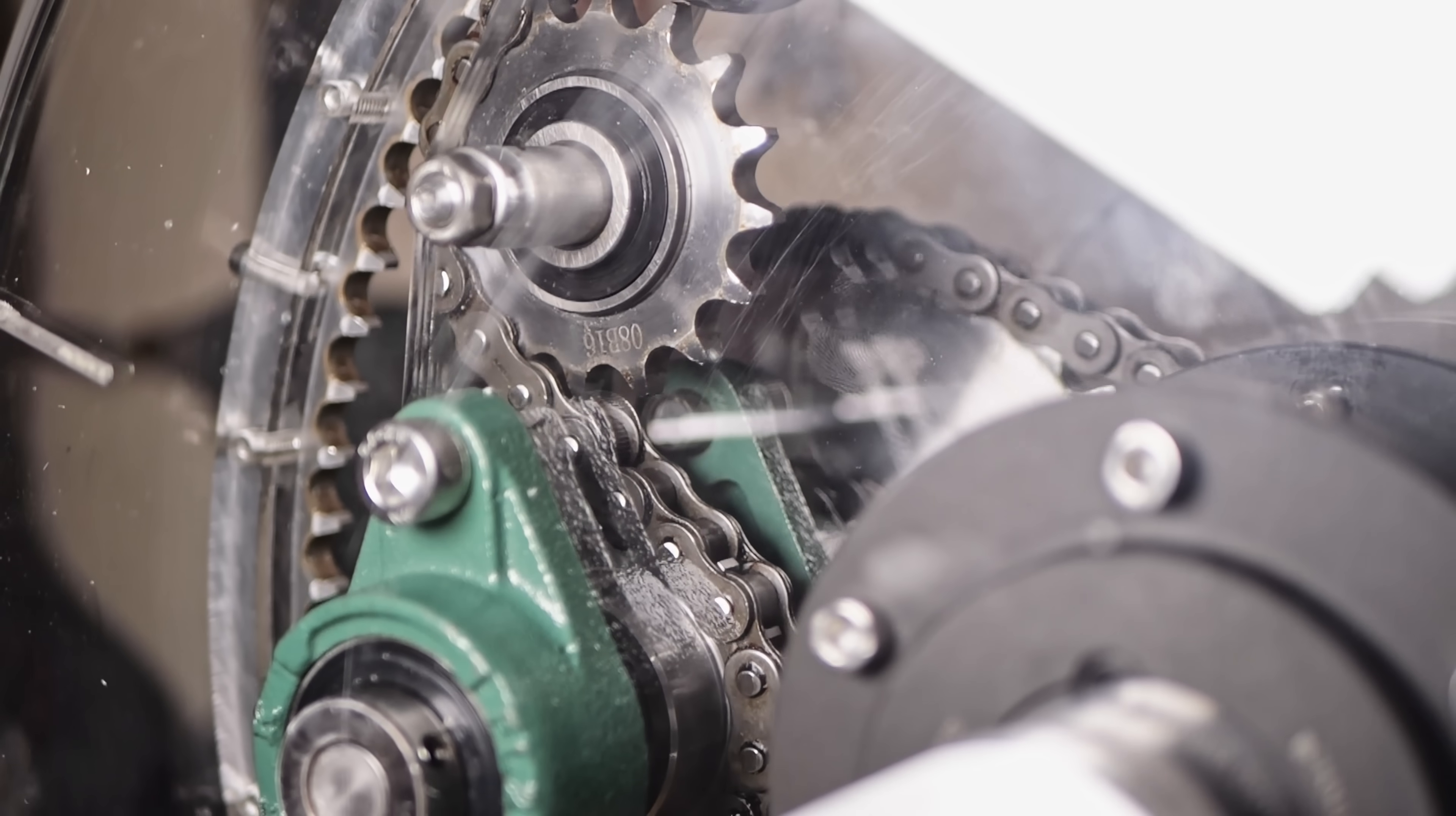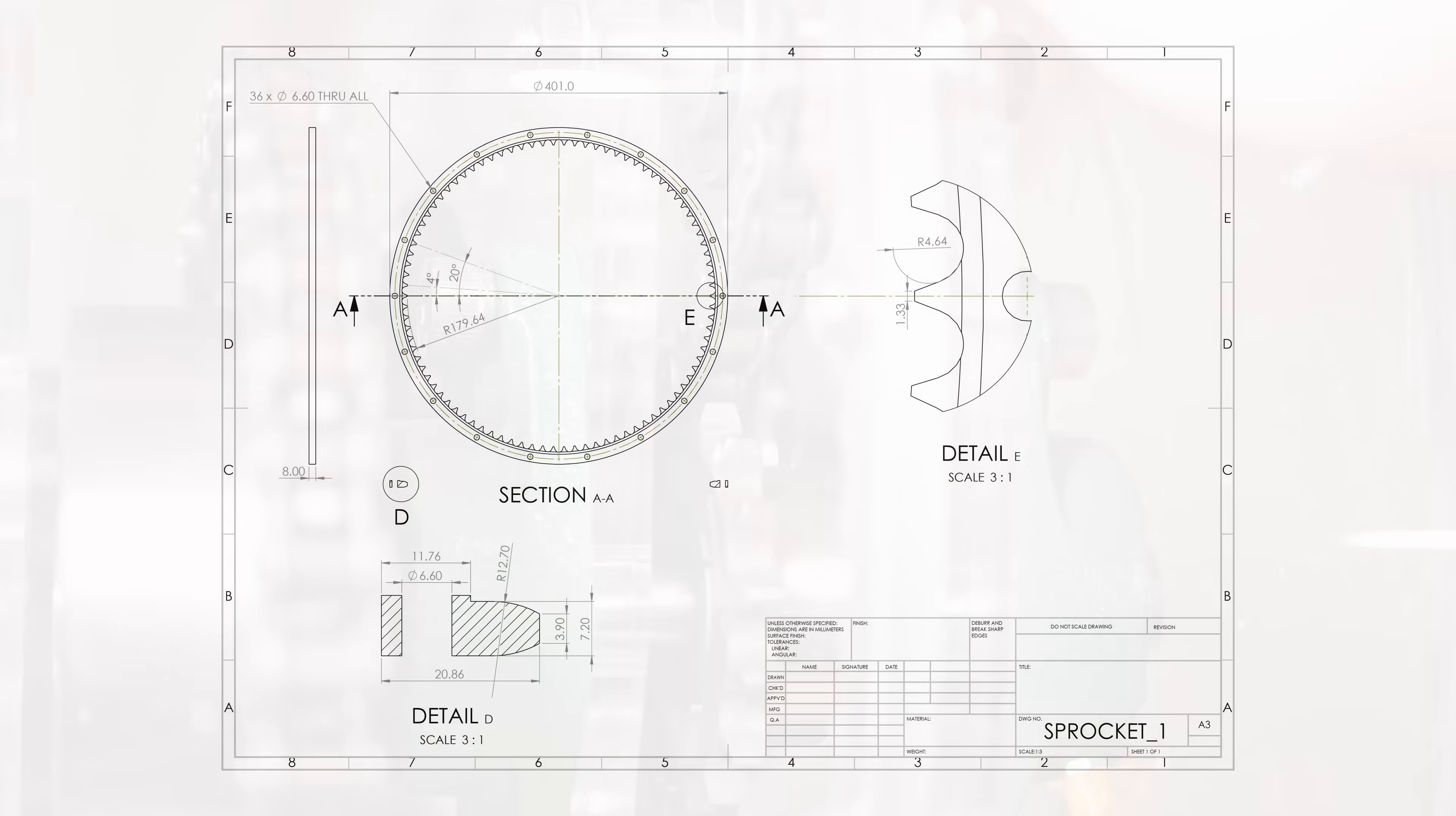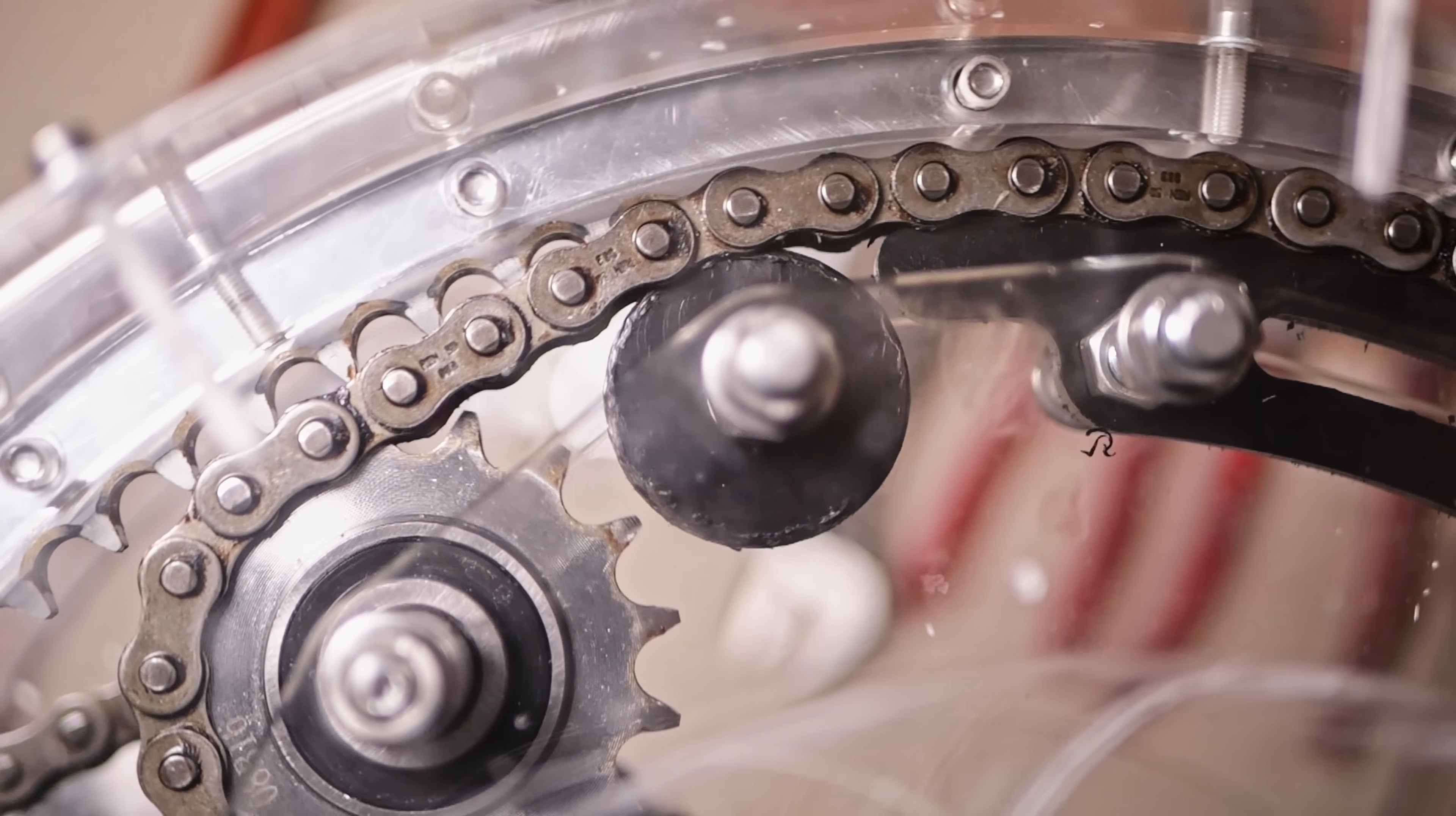The design makes use of motorcycle chain and mostly off the shelf components. The inverse sprocket is the most complicated custom component and this was CNC machined by the engineering department at my university and they did a really good job with it. I then machined and laser cut the rest of the custom components myself.